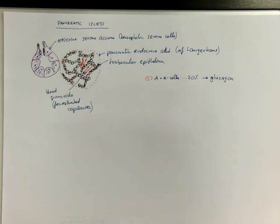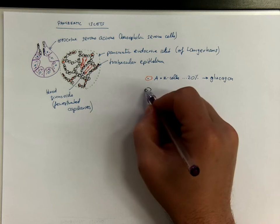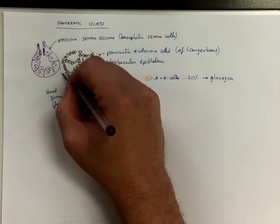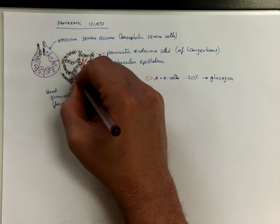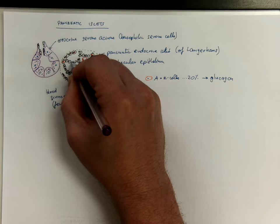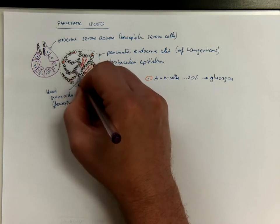The most numerous are the B cells. These are just artificial colors, okay? Just not the real colors in the real slide. The B cells occupy mostly the center of the islet.